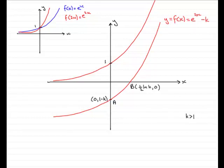Now, what we can do with this minus k means that we now translate our graph of e to the 2x k units downwards. So this point here, on the end of the curve, is going to move down k units.